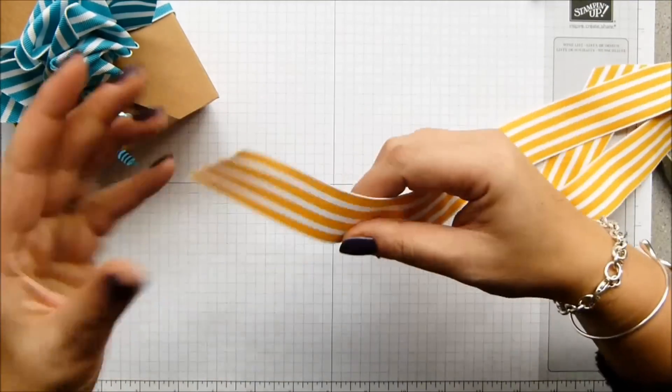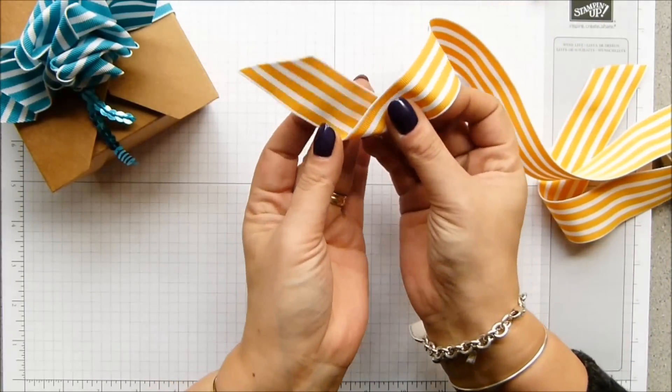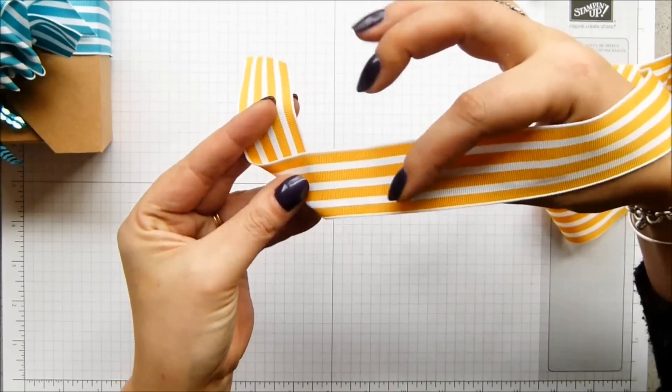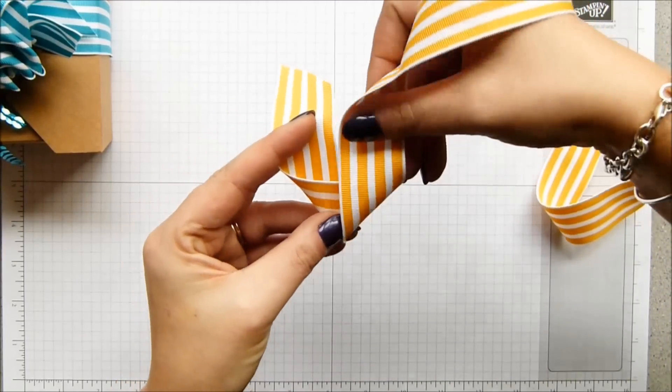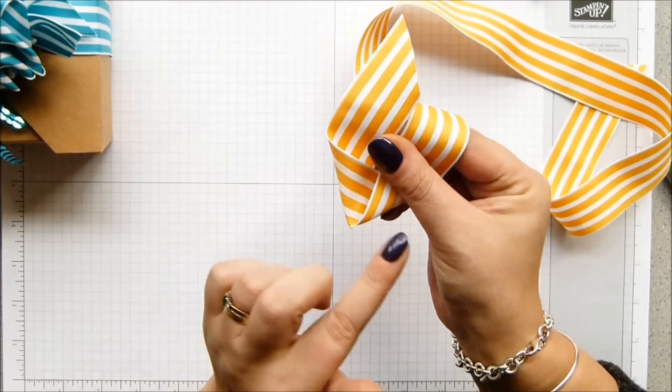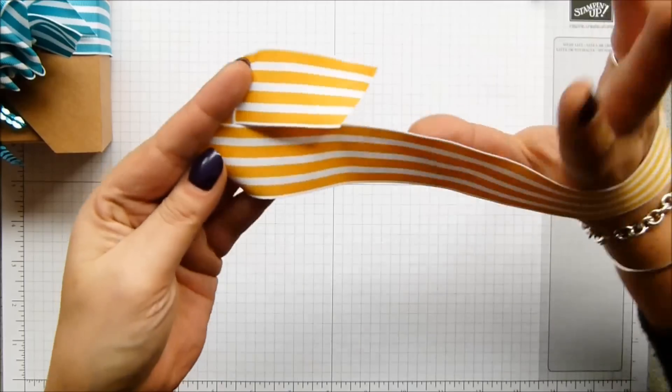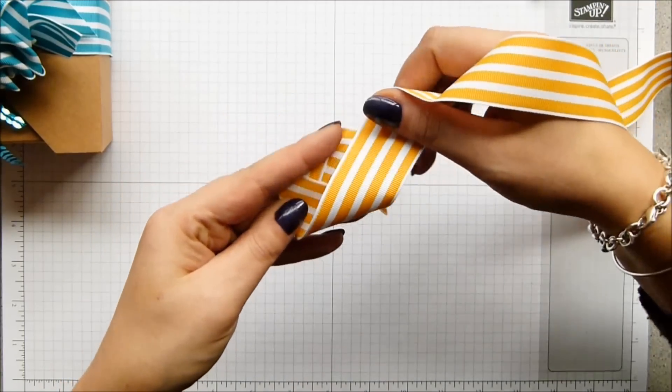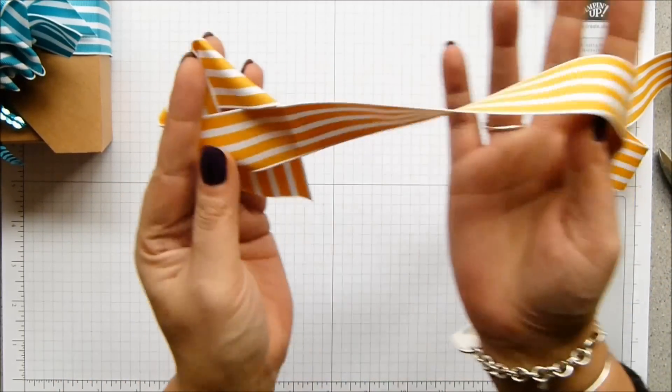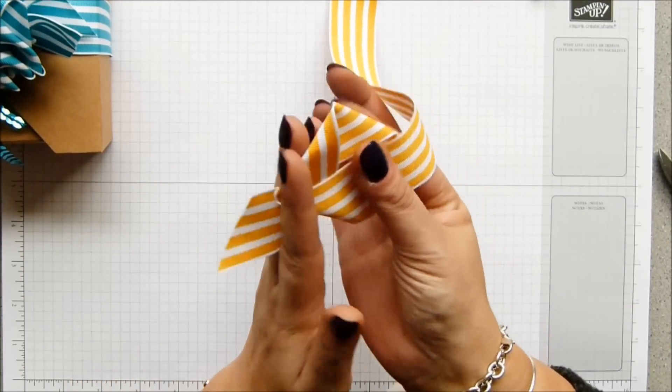You start with your piece of ribbon and you fold it at a right angle like that. Fold it at a right angle, and then you take this bit and fold that over at a right angle again, so we've now got a point. You use your fingers—I'm gripping it there, I'm gripping it there—take this bit, fold it over, and you just keep turning round and doing it over and over again.